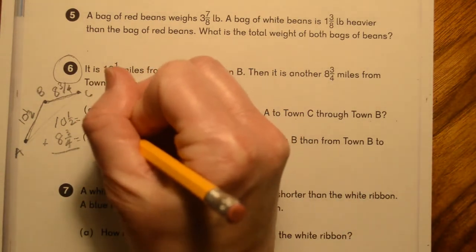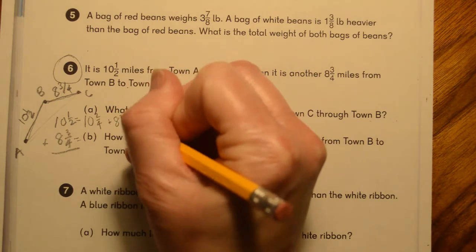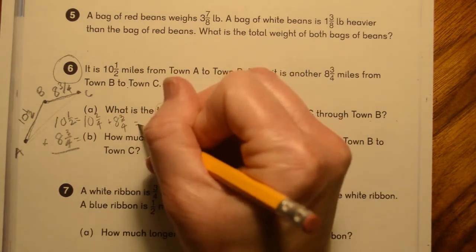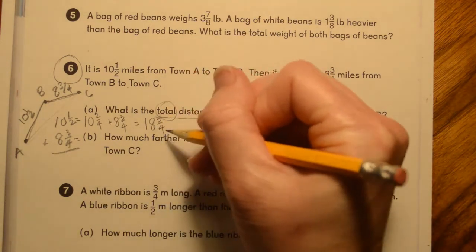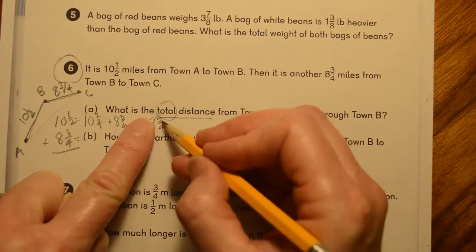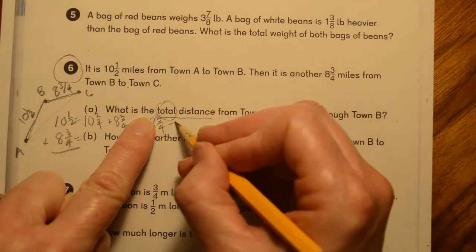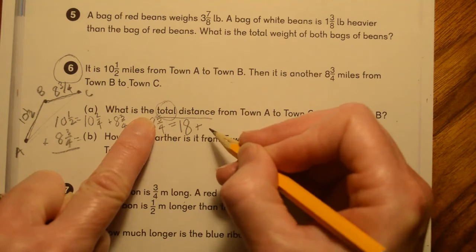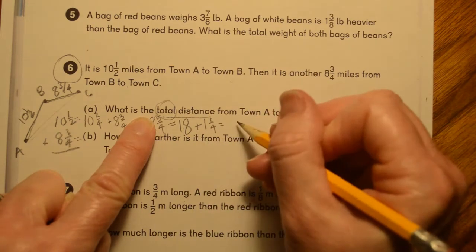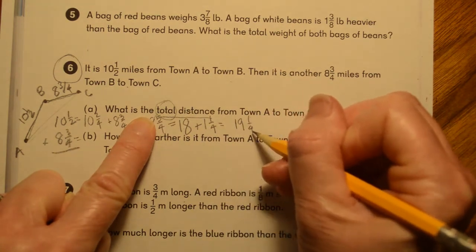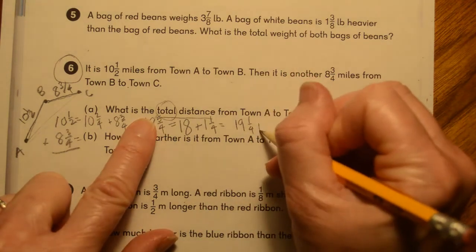So you should have gotten ten and two fourths plus eight and three fourths. My goodness. This was really poor planning. Eight and three fourths. When we add those up, we get eighteen and five fourths. This is the part where I was telling you about the improper fraction. So let's ignore the eighteen for just a second and focus only on the five fourths. So five fourths, if we were to change that to a mixed number, this would be the eighteen that we already have, plus five fourths is one and one fourth. And so when we add the whole number of parts together, we get nineteen and one fourth. So the answer is the total distance from town A to town C through town B is nineteenth and one fourth miles.